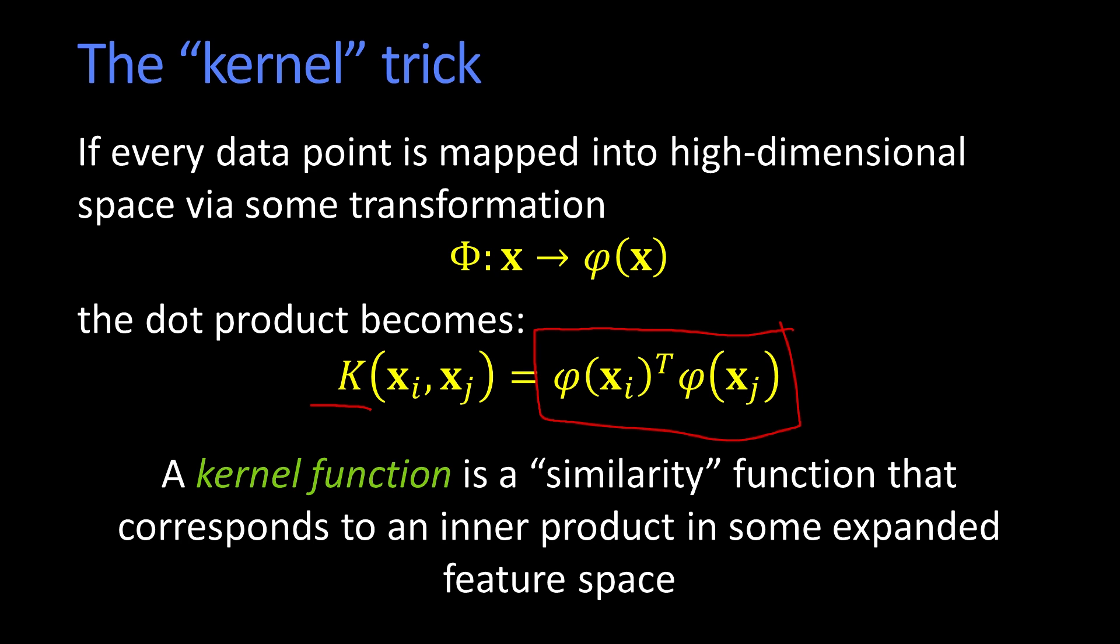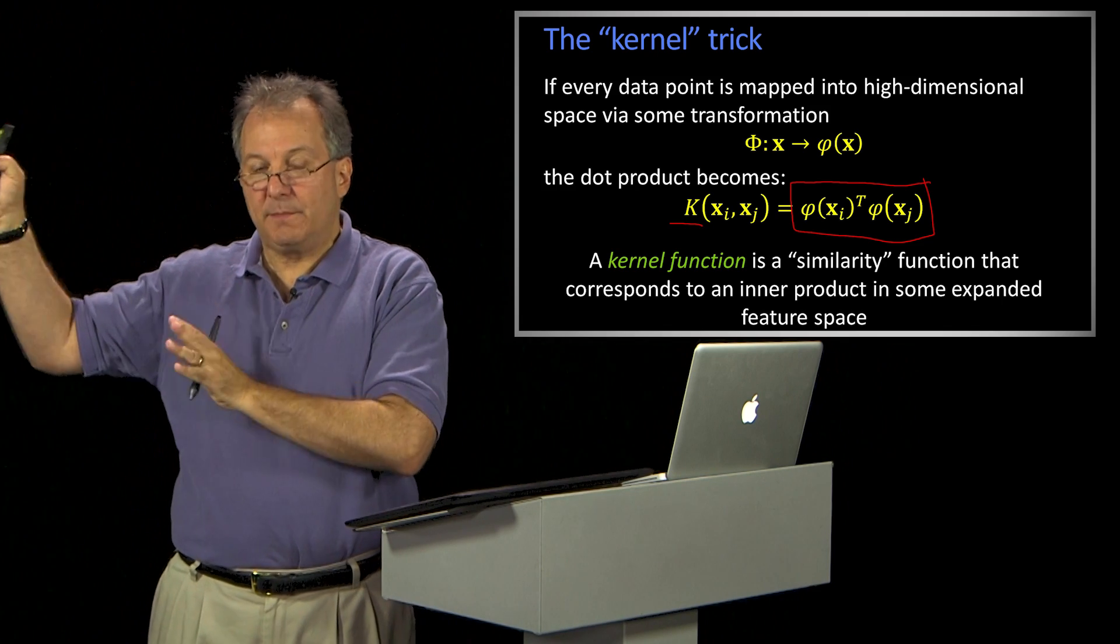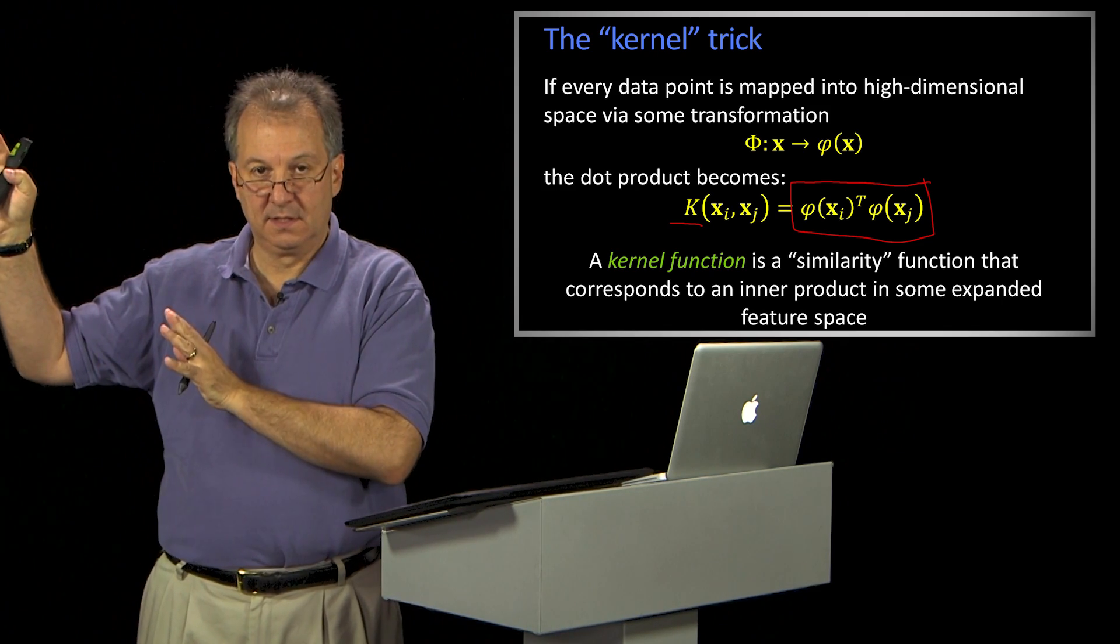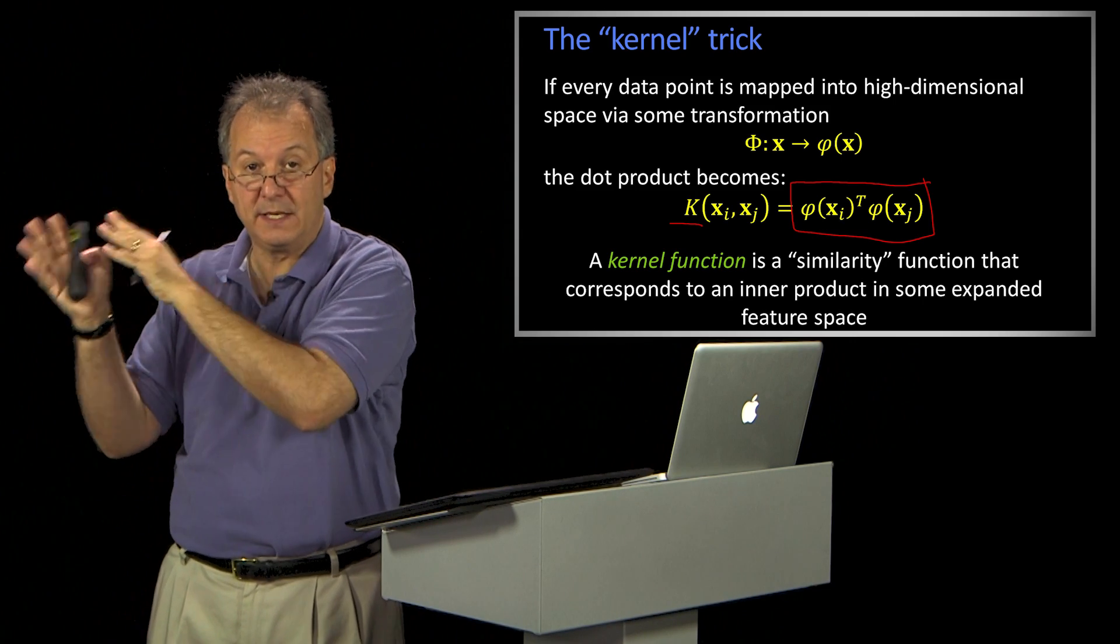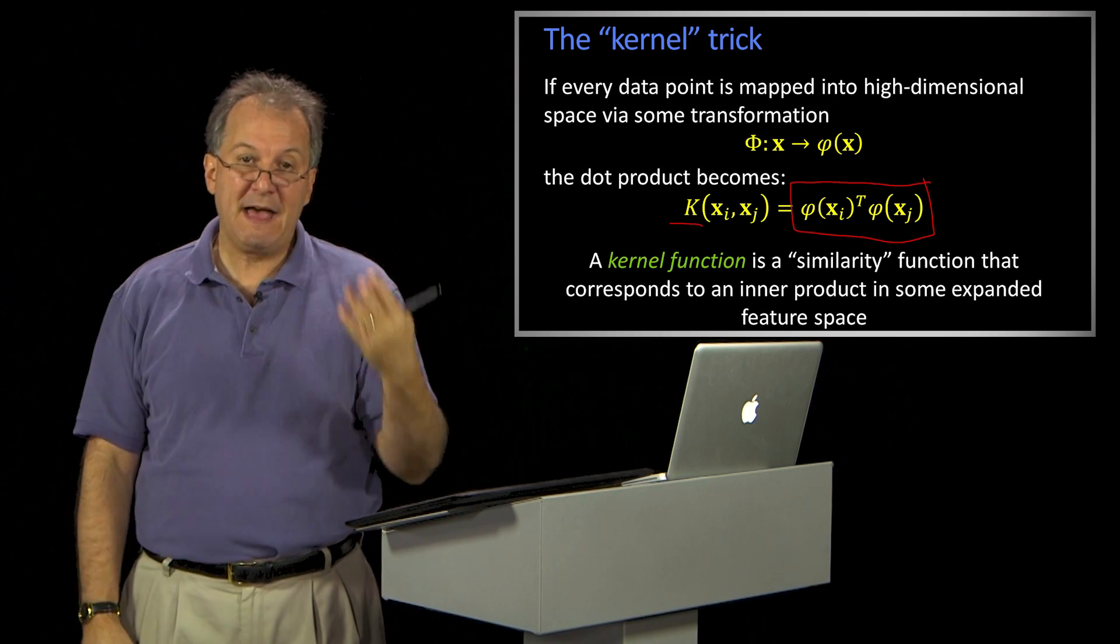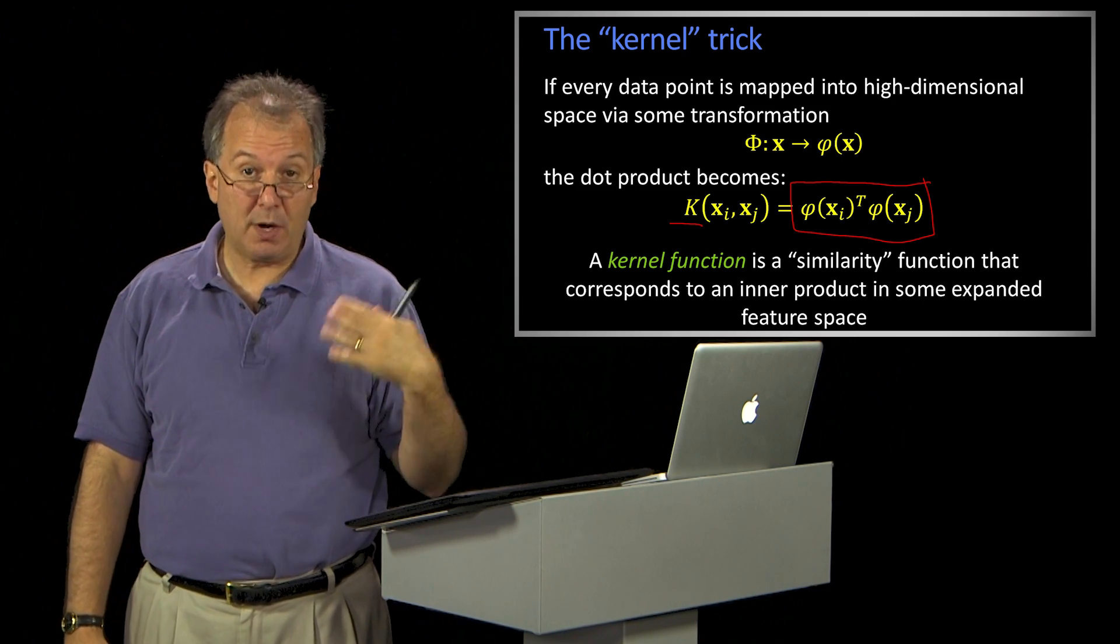I'm going to show you an example in a minute. But basically, the idea is, if I give you a function of xi and xj, some function k, as long as there's some higher dimensional space in which that function is just the dot product of that higher dimensional space, that kernel is a dot product.